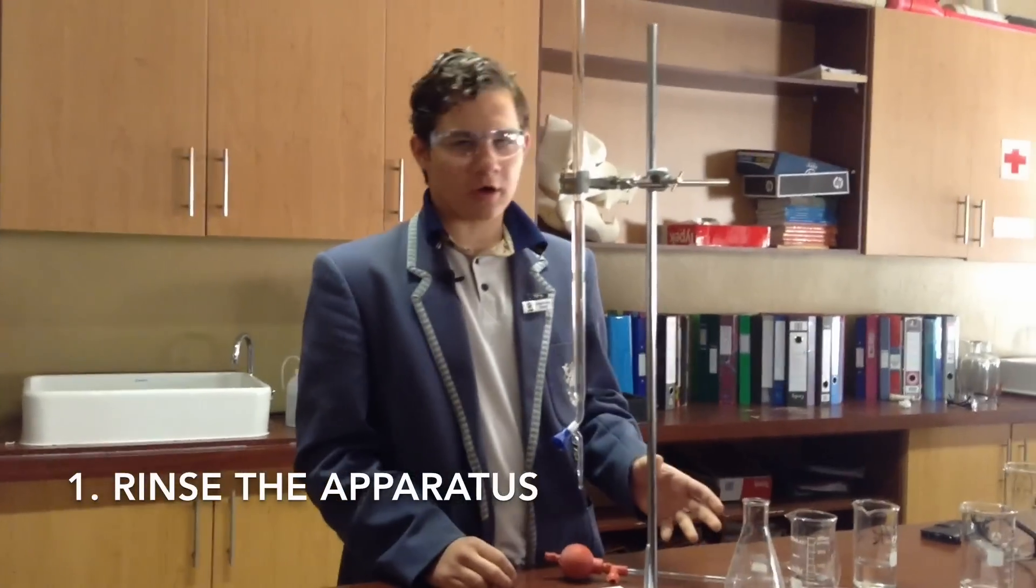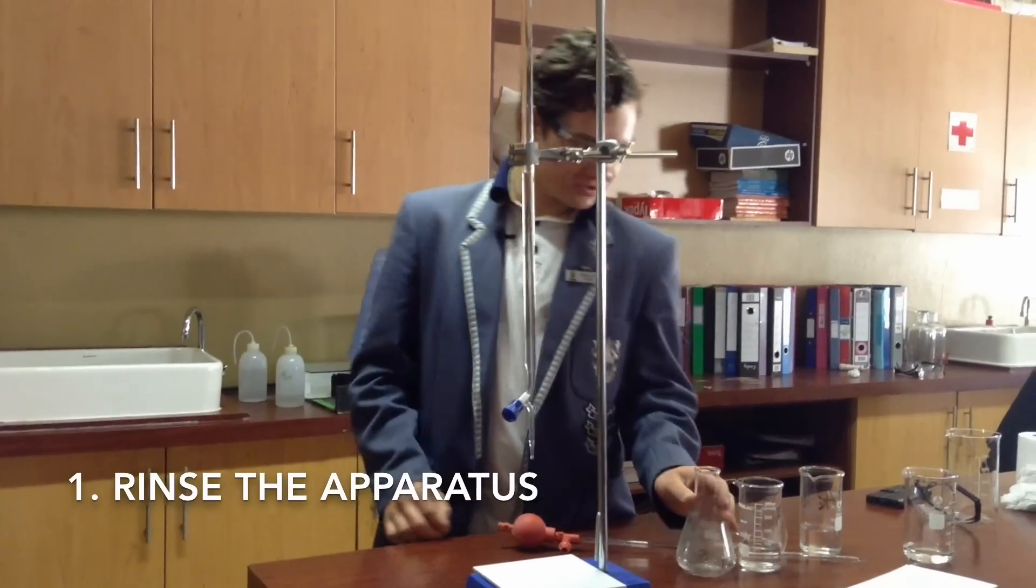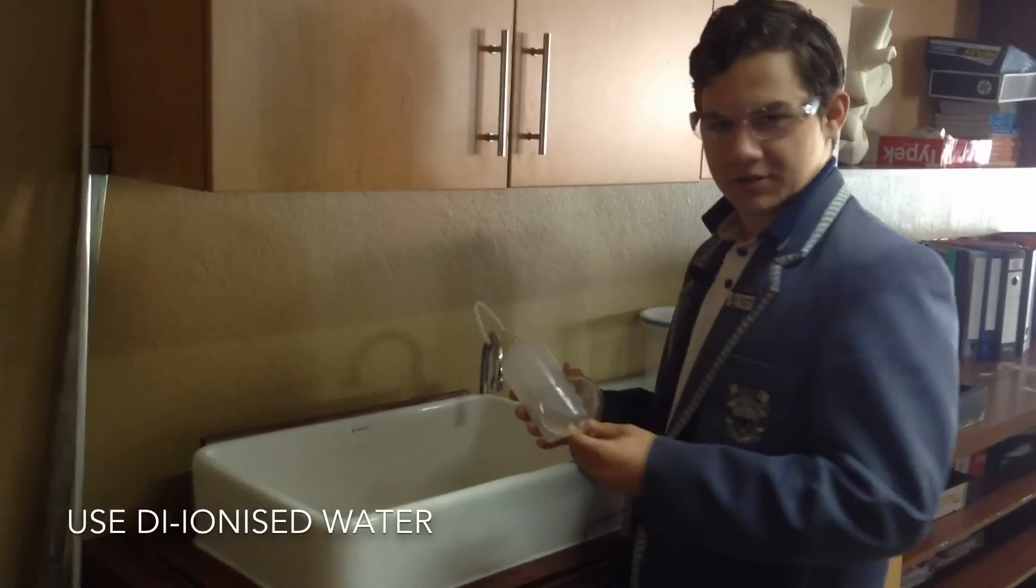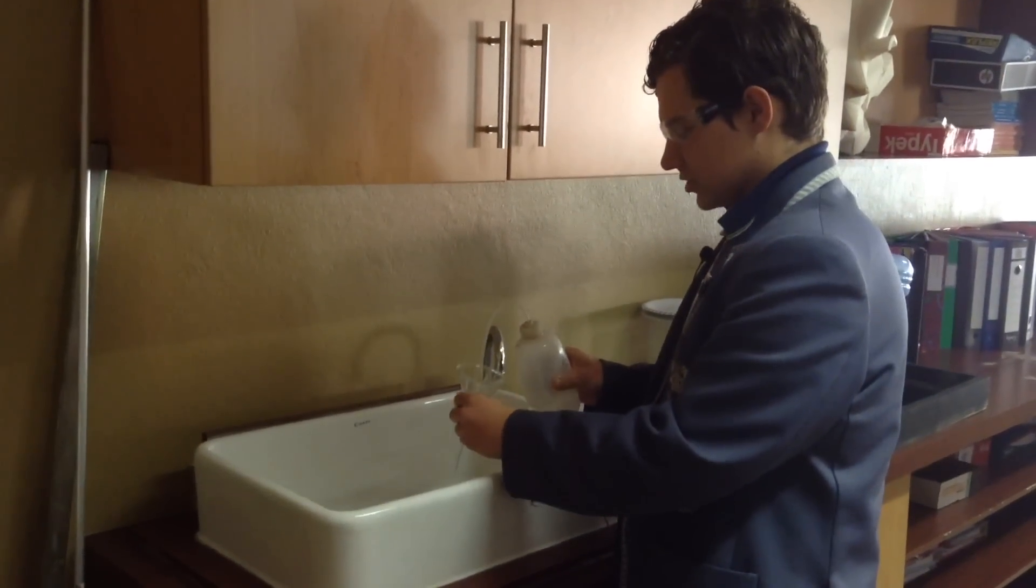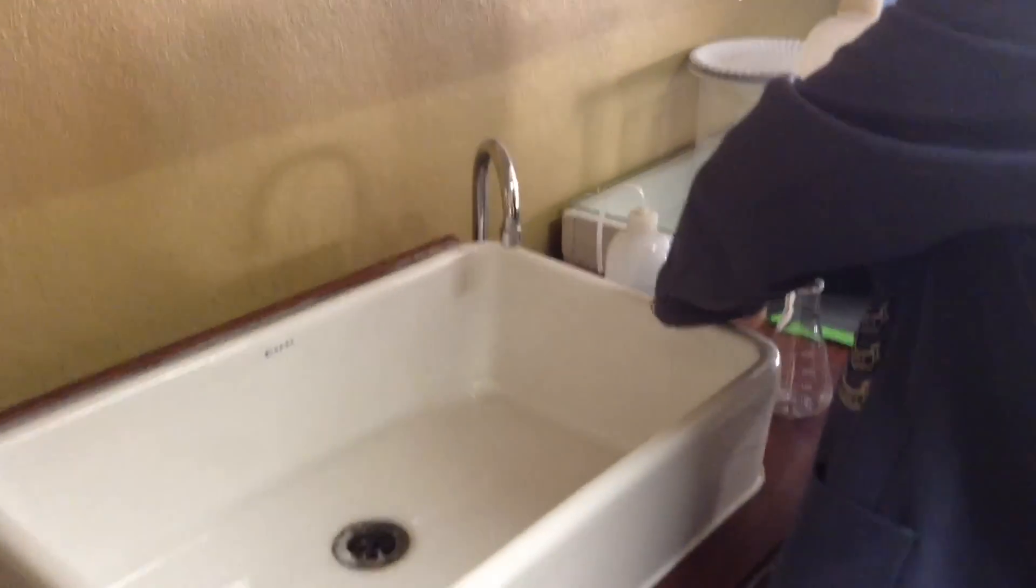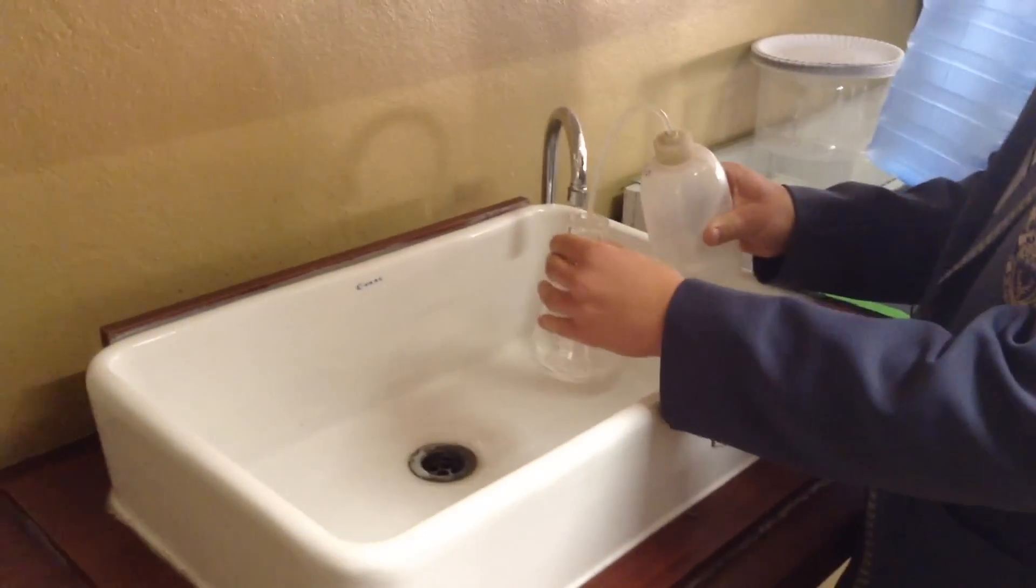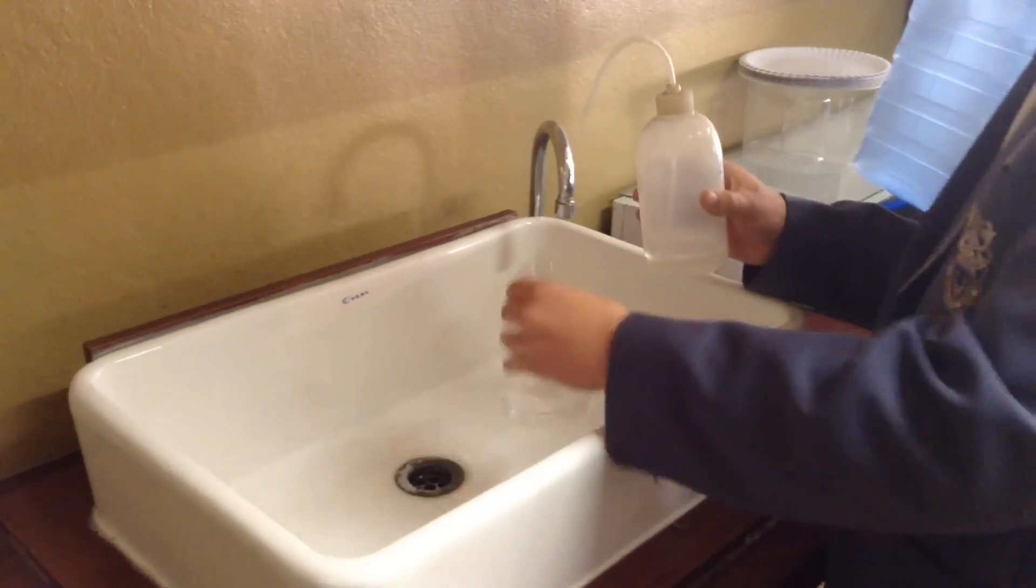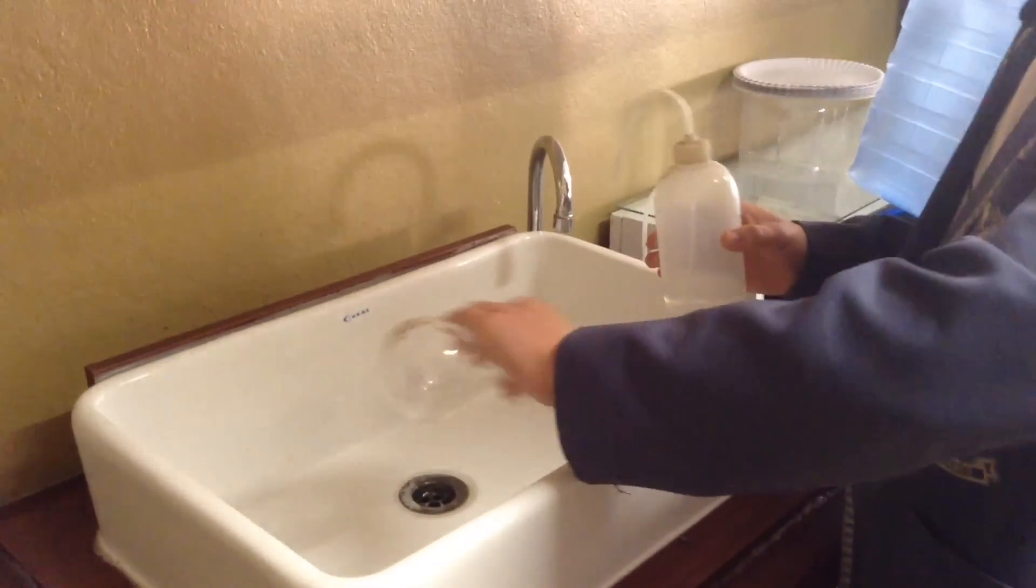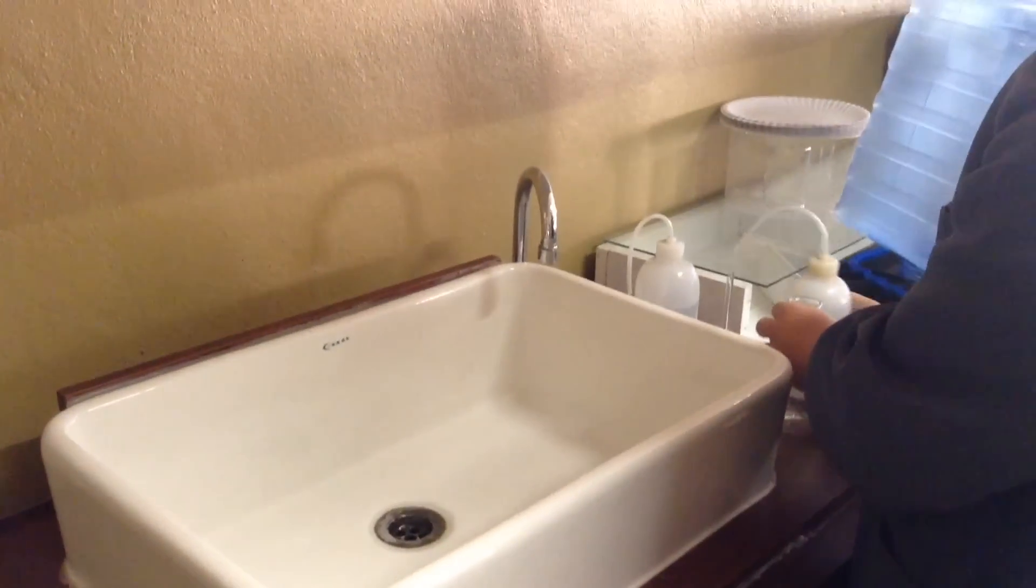Okay, so before we start with anything we need to first rinse all our apparatus. So we're using deionized water because it obviously doesn't react. We're just going to clean our apparatus - conical flask - make sure to clean inside and rinse, and also make sure to clean the neck. Don't clean your burette because we're just going to fill it up with our known solution.